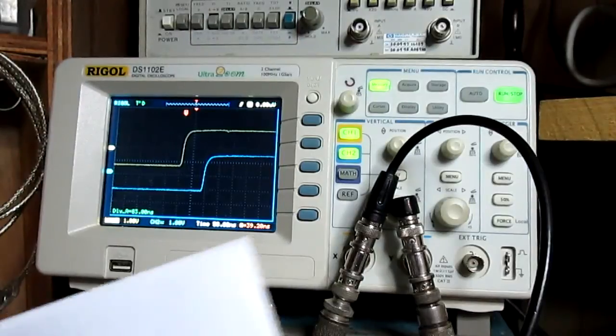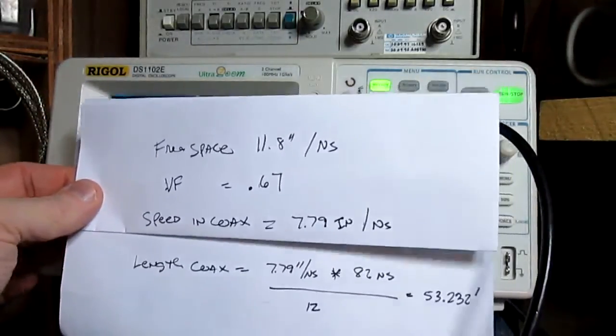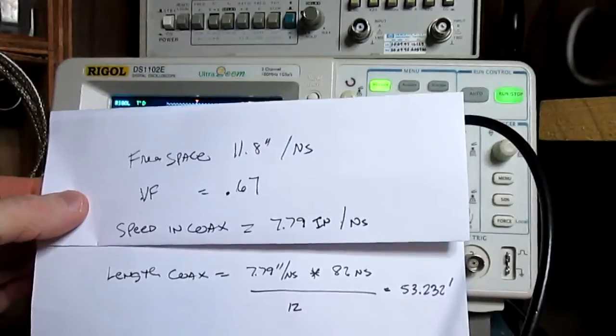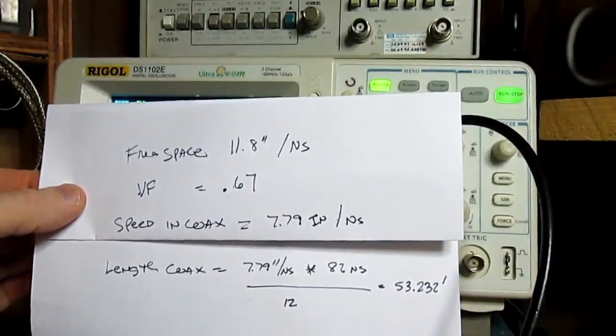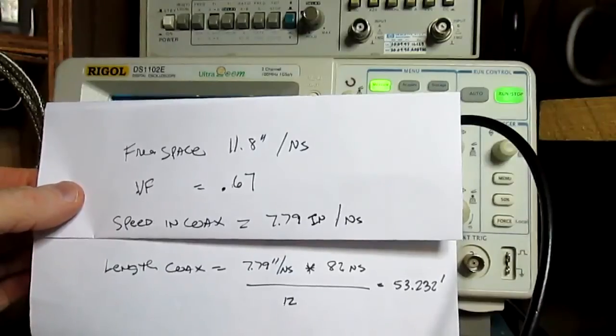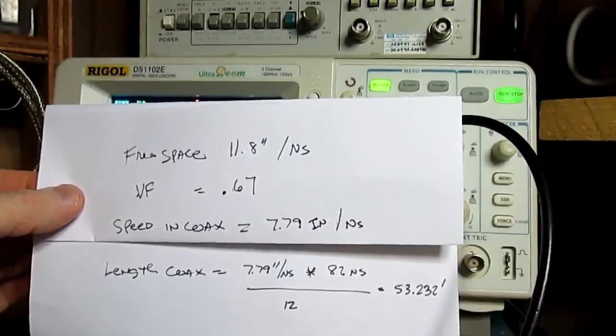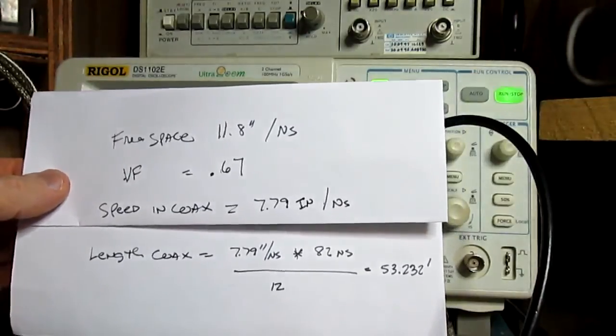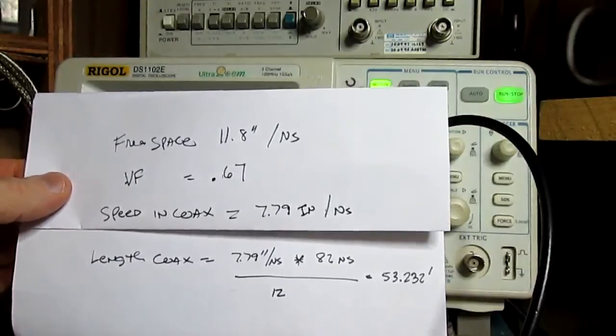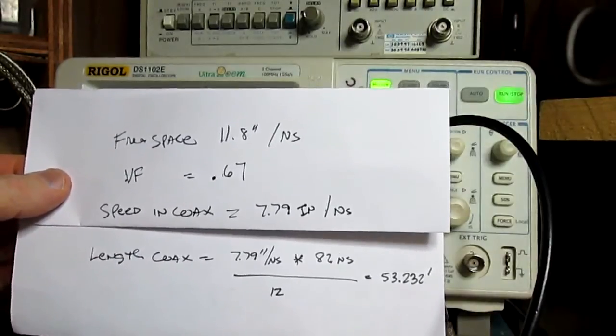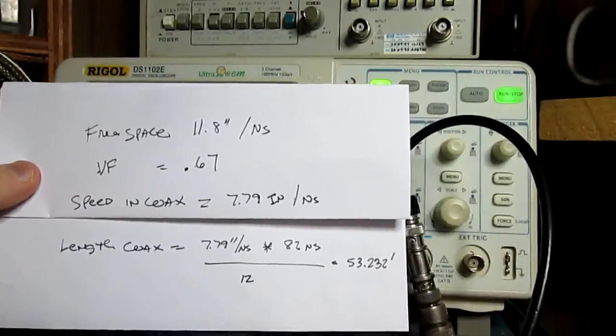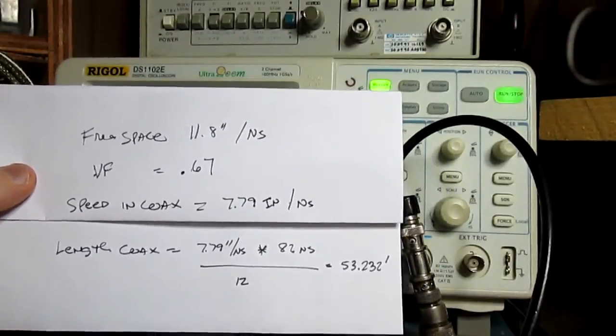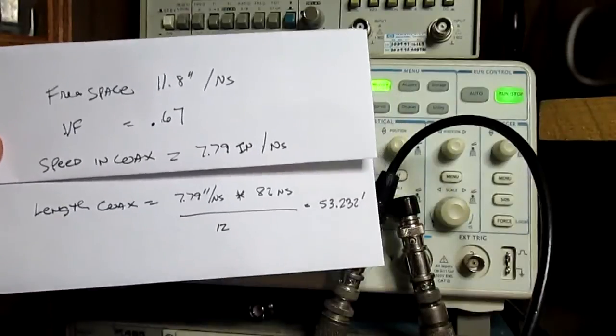Okay. So, the math on that is basically this. They're saying that the free space speed of the electrical signal is 11.8 inches per nanosecond. And with a velocity factor, in my case, this coax is RG8, I believe, is 0.67. So, the speed in the coax, keeping that in mind, is 7.79 inches per nanosecond.